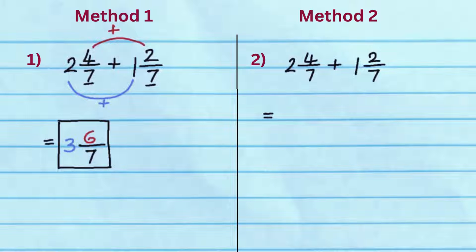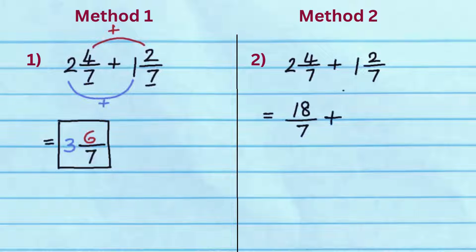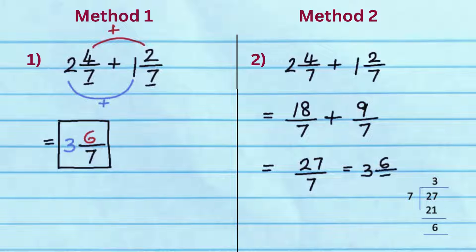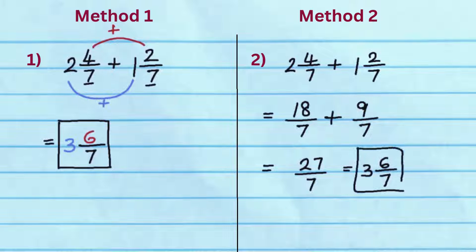In method 2, first convert the mixed fractions to improper fractions. 2 and 4 sevenths will become 18 by 7, and 1 and 2 sevenths will become 9 by 7. Now add the fractions by adding numerators 18 and 9 since the denominators are the same. We get 27 by 7. Since 27 by 7 is an improper fraction, reduce it to get the answer 3 and 6 sevenths.